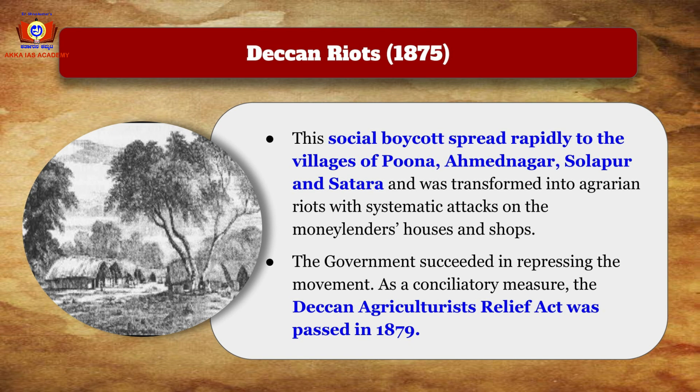This social boycott spread rapidly through the villages of Pune, Ahmednagar, Solapur, and Satara, and was transformed into agrarian riots with systematic attacks on moneylenders' houses and shops. The government succeeded in repressing the movement, but as a conciliatory measure, the Deccan Agricultural Relief Act was passed in 1879, according to which farmers could not be arrested and imprisoned if they were unable to pay their debts.